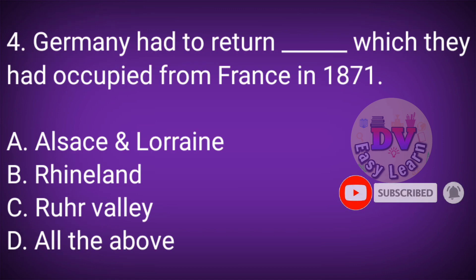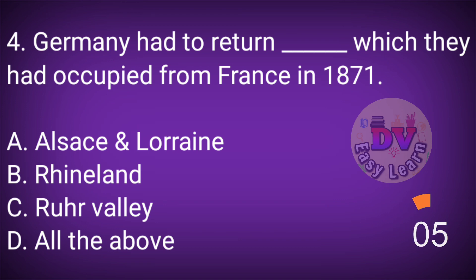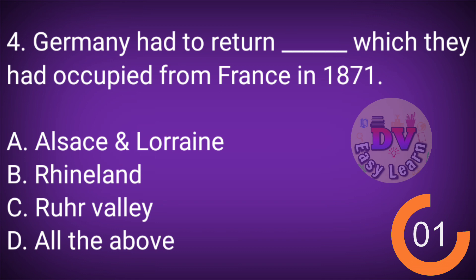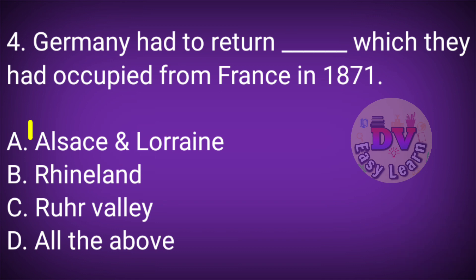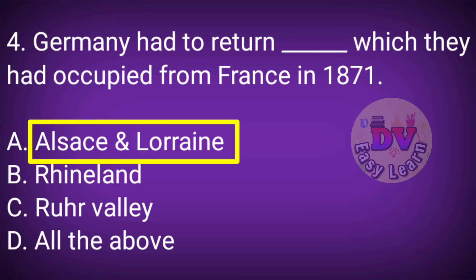Question No. 4: Germany had to return the territory they had occupied from France in 1871. Correct answer: Alsace and Lorraine.